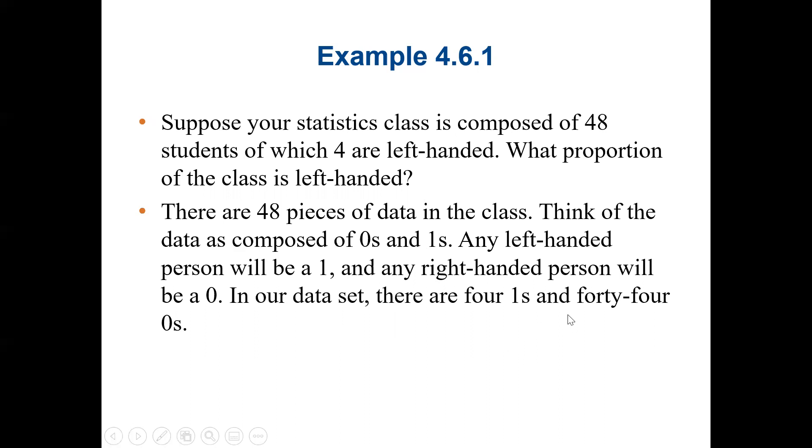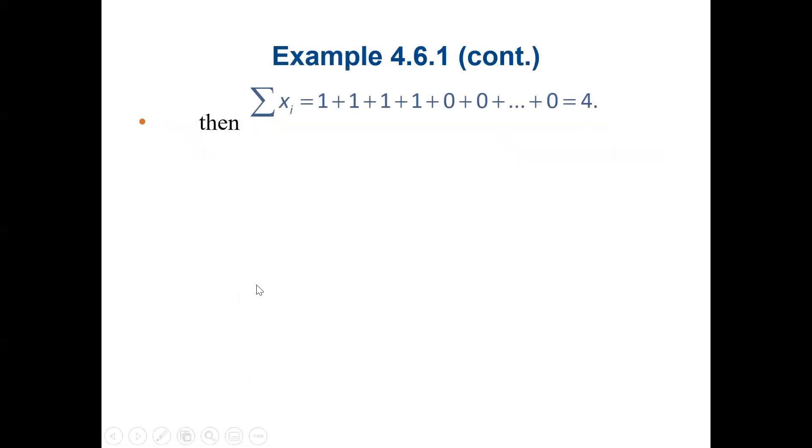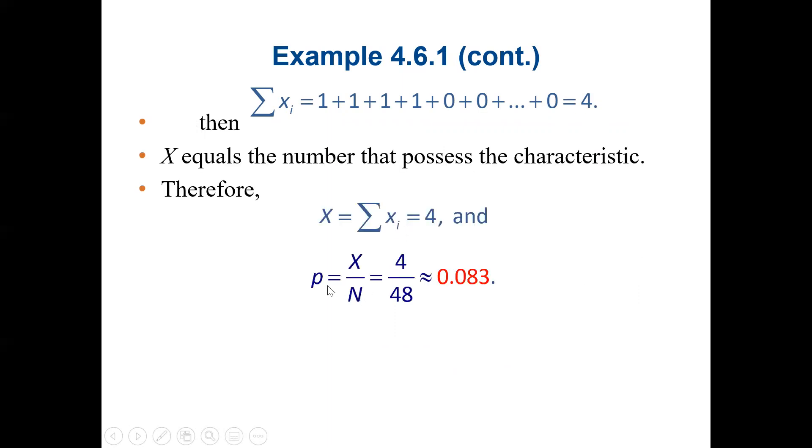So in our data set, there are 4 ones and 44 zeros. Again, assuming Xi equals 1 if it's left-handed, 0 if it's right-handed, this means our total value will be 4. X equals 4, and to find the proportion, as we said earlier, it will be 4 divided by 48. Again, 48 is the total population of the students, and only 4 of them possess the characteristics that we are looking at. So the answer will be 0.083. Then 0.083 is the proportion of people in the class that are left-handed.